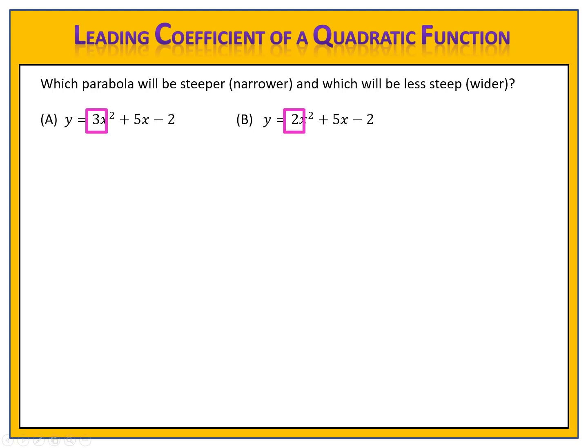We compare the parabolas by looking at the leading coefficients of the functions. Function A has a leading coefficient of 3, while function B has a leading coefficient of 2. The function that has the largest leading coefficient will be the steepest or narrowest graph, and the function that has the smaller leading coefficient will have the graph that is wider or less steep. Since 3 is the largest leading coefficient, function A will have the steeper or narrower graph, and function B will have the less steep or wider graph.